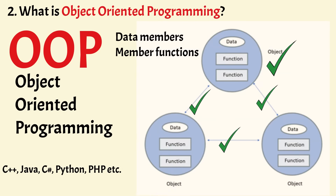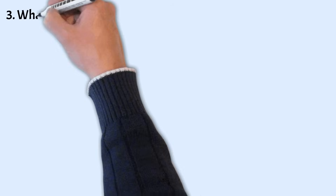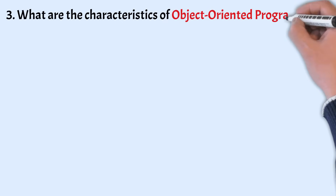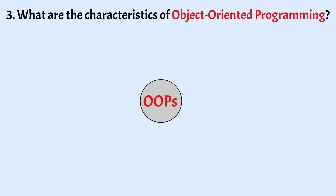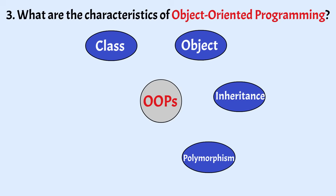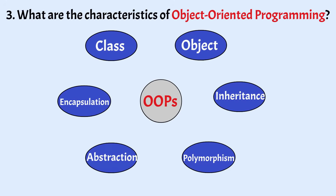So let's take another question: what are the characteristics of object-oriented programming? The characteristics of object-oriented programming are class, objects, inheritance, polymorphism, abstraction, and encapsulation.